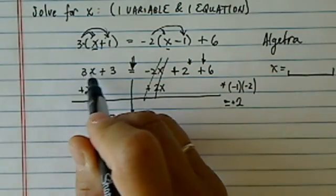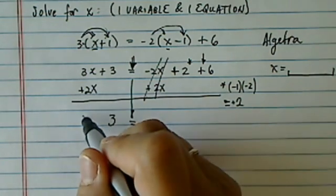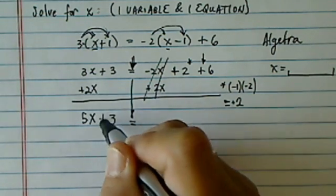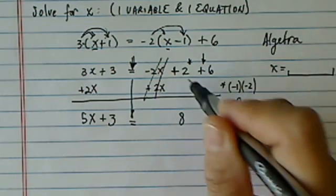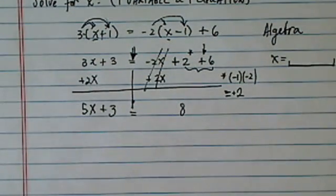And here, 3X plus 2X, think of 3 apples plus 2 apples, that's 5 apples. Okay, on this side I have 8, because 2 plus 6 is 8. All right, that's a lot of work.